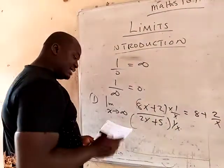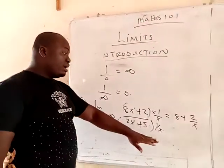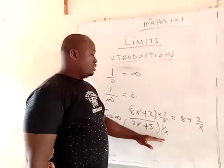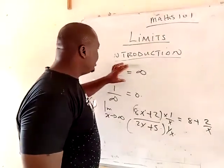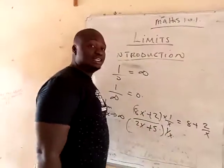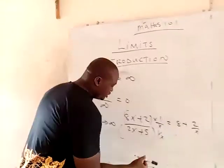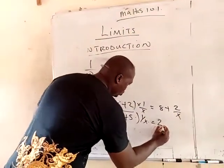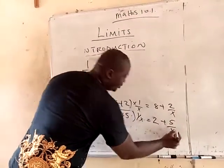Do not forget — under limits involving infinity or zero, you have to multiply everything out. So multiplying everything out, you're going to get: this divided by this gives 2, plus 5 divided by x.